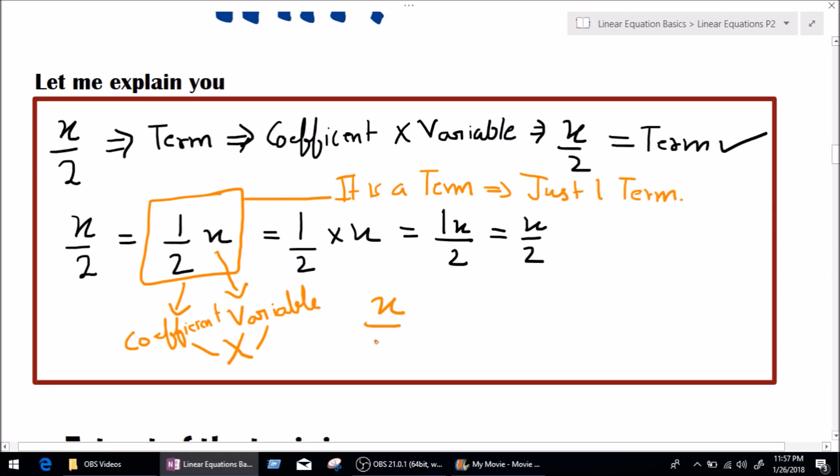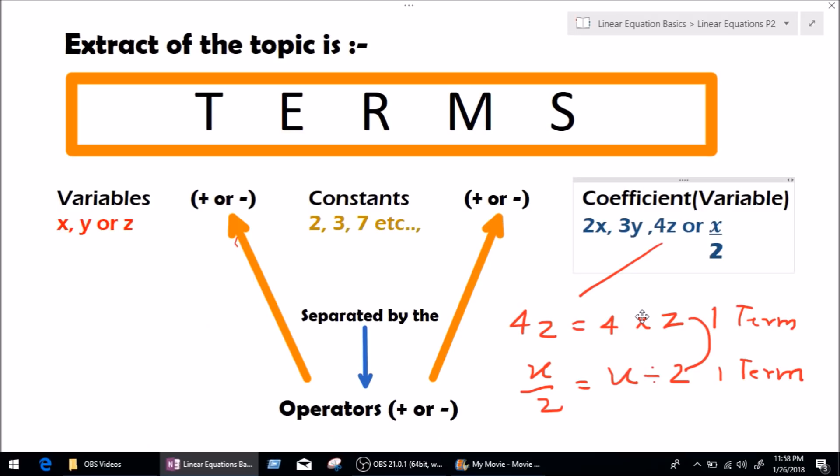Which gives out a variable and a coefficient multiplied together. And which gives out to one term. Simple. Now, let's go get the main extracts from this topic.